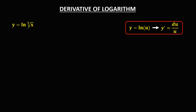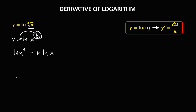For the next given, we rewrite the cube root in exponential form: y equals ln of x to the power 1 over 3. Using the logarithm property that ln(x^n) equals n times ln(x), we bring the exponent out front: y equals 1 over 3 times ln x. Here u is x, and the derivative of u is 1.